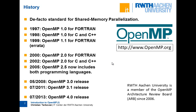OpenMP is available for C, C++, and Fortran. The initial version was created when all the vendors set together and agreed on a common set of pragmas, directives, and APIs so users could write portable parallel code — that was when versions 1 and 2 were created. Then there was a pause. In 2008 it gained momentum again with OpenMP 3.0, which introduced tasks. In July of last year, OpenMP 4.0 was released.